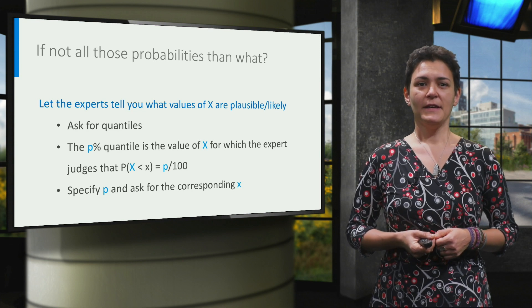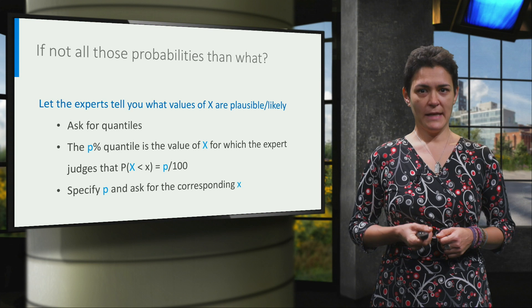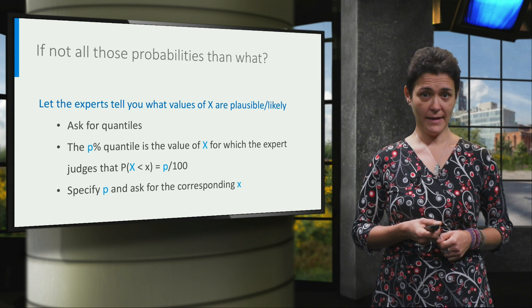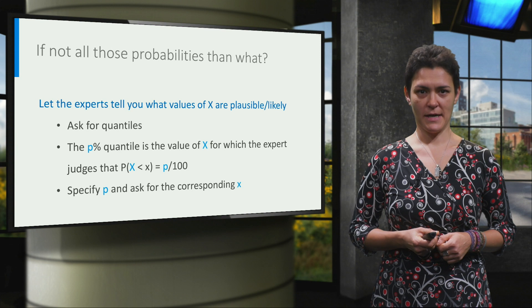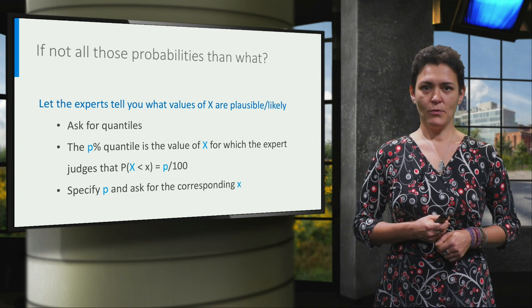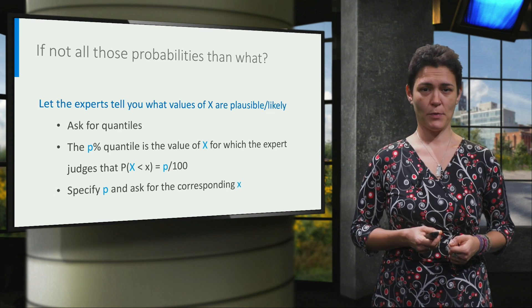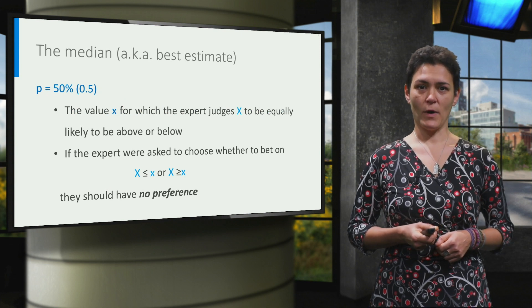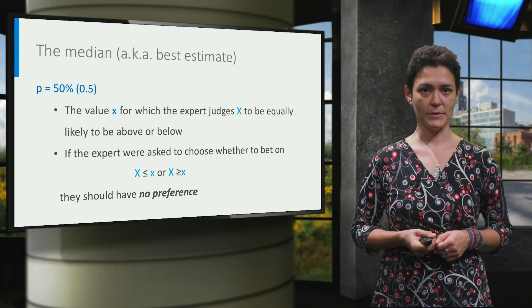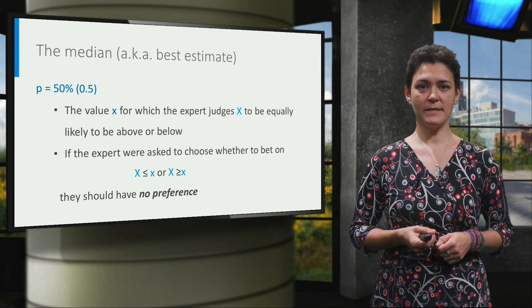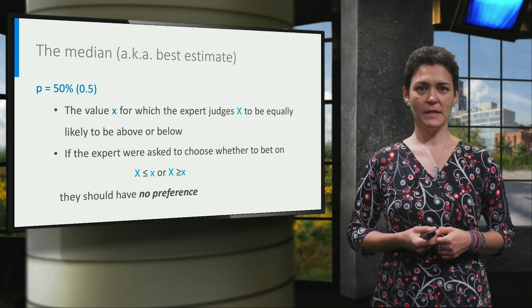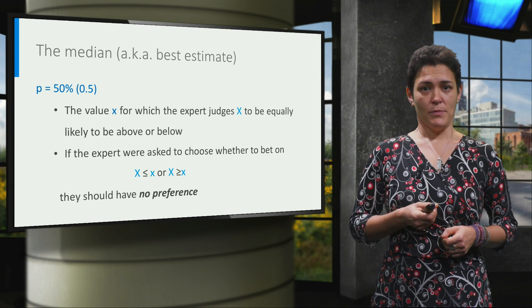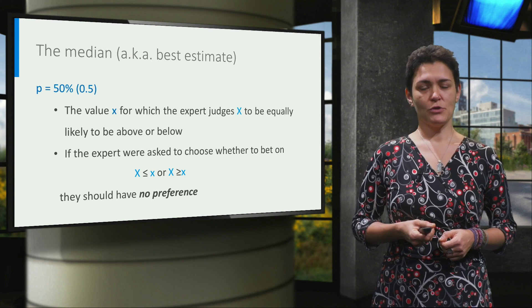To refresh your memory, the p-percent quantile is the value x of the variable X for which the probability that the variable X is less than x equals p divided by 100. In expert elicitations, we fix p and ask the experts to estimate the corresponding x. For instance, the median of a distribution is the 50% quantile. When experts are asked for their best estimate of a variable, their best estimate is then modeled as the median of the distribution of that variable.